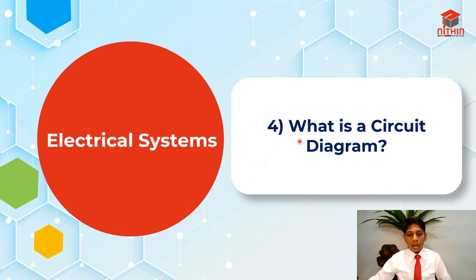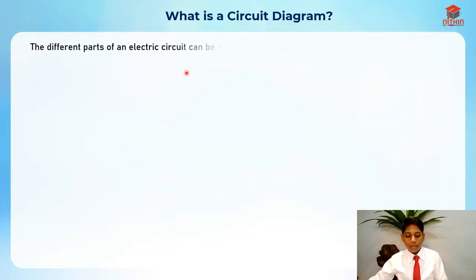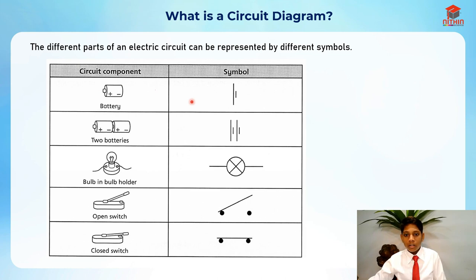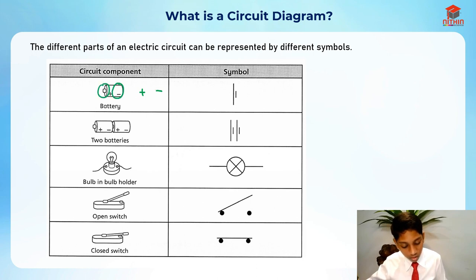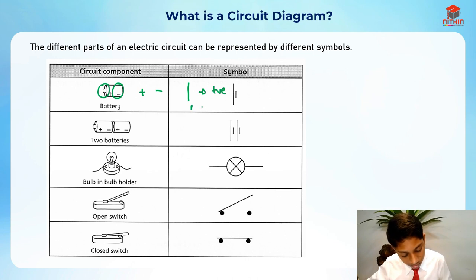For the fourth segment, a circuit diagram is basically when all the parts are represented by symbols. The different parts of an electric circuit can be represented by different symbols. For the battery, one battery is drawn like this. You need to know the position — the long line is positive and the short line is negative.